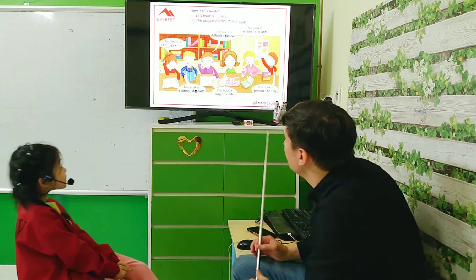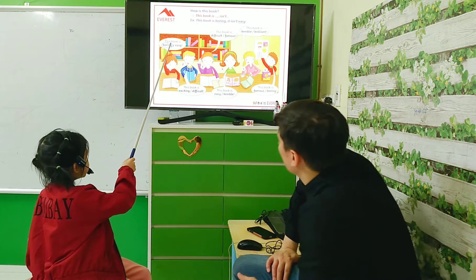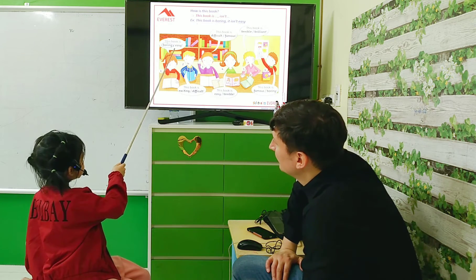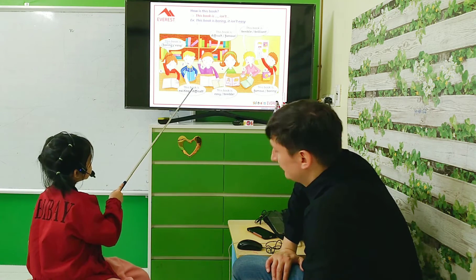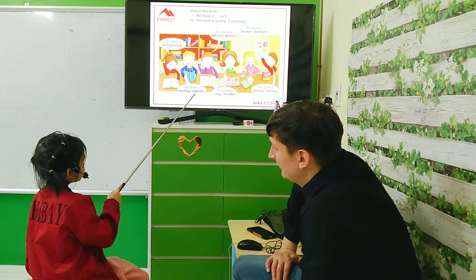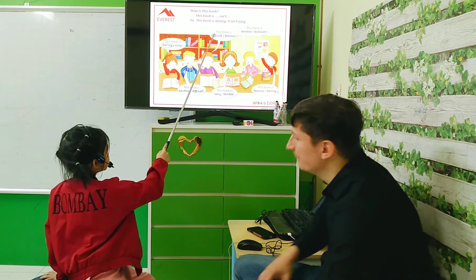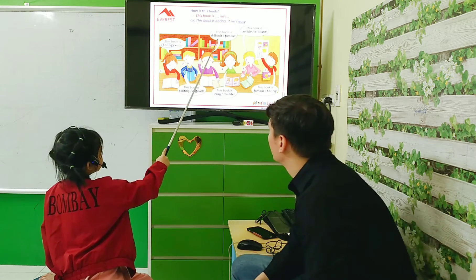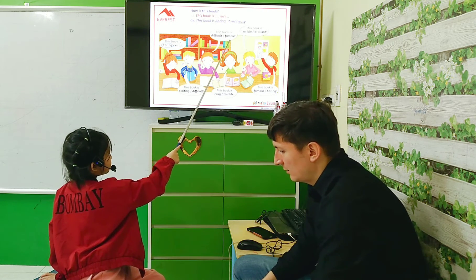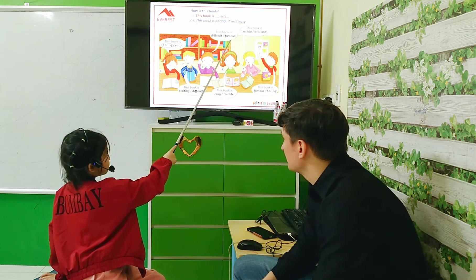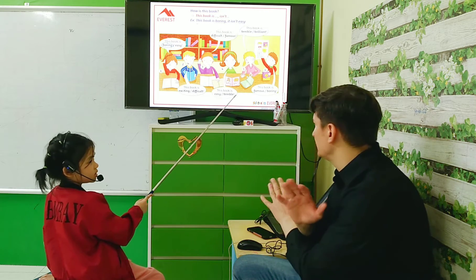So let's look at these people and their books. Please describe the books from first to the last person. This book is boring, lazy. It isn't easy. This book is exciting. It isn't difficult. Okay. Number three. Famous. Number four. This book is terrible. It isn't difficult. It isn't terrible.